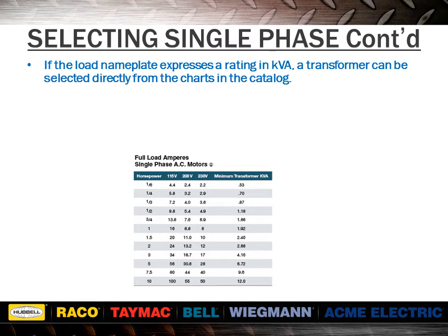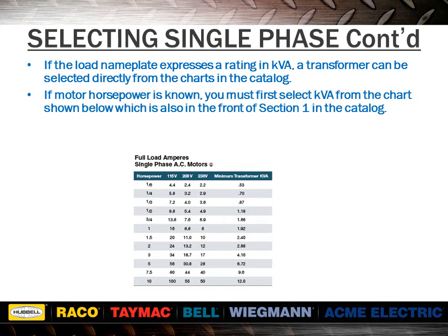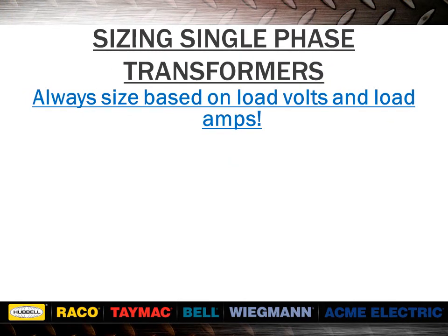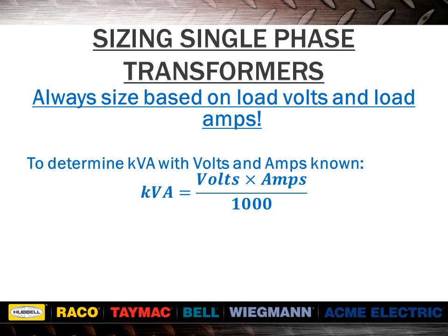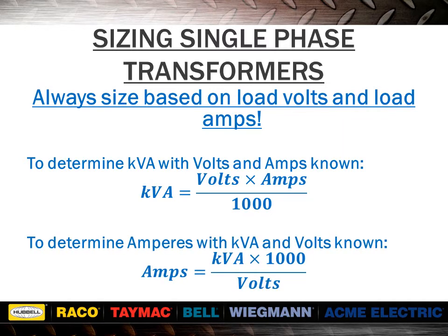If the load nameplate expresses a rating in kVA, a transformer can be selected directly from the charts in the catalog. If motor horsepower is known, you must first select kVA from the chart in the front of Section 1 in the catalog. If motors are started more than once per hour, increase the minimum kVA by 20%, because motors start under locked rotor condition and starting amps will be six or seven times the normal running amps. The amp rating on the motor is the most accurate way to size a transformer. To determine kVA with volts and amps known, take volts multiplied by amps divided by 1,000. To determine amps with kVA and volts known, take kVA multiplied by 1,000 divided by the volts.